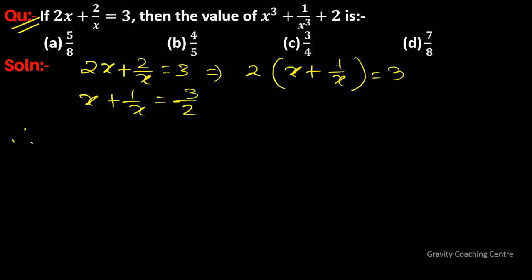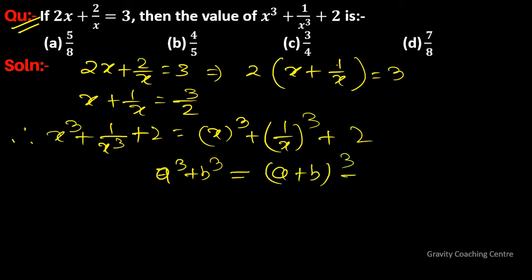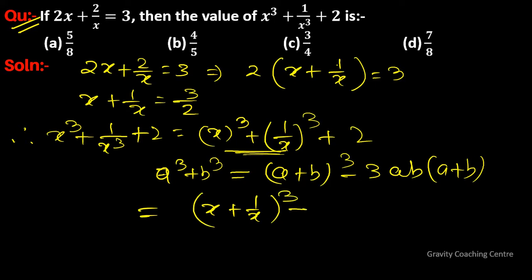Therefore, x³ + 1/x³ + 2 equals (x + 1/x)³ + 2. Now we use the identity a³ + b³ = (a + b)³ - 3ab(a + b), so this becomes (x + 1/x)³ - 3 · x · (1/x) · (x + 1/x) + 2.